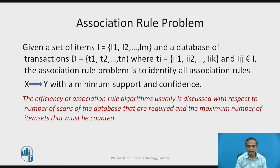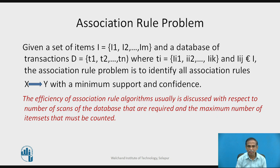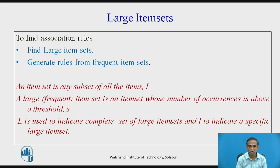Now we will concentrate on how the association rule problem is actually tackled. Given a set of items I1, I2, ..., IM and a database of transactions T1 to Tn, the association rule problem is to identify all association rules of the type 'if X then Y' with minimum support and confidence. The efficiency of this algorithm is discussed with respect to the number of database scans performed and the maximum number of items that must be counted to calculate a particular rule.